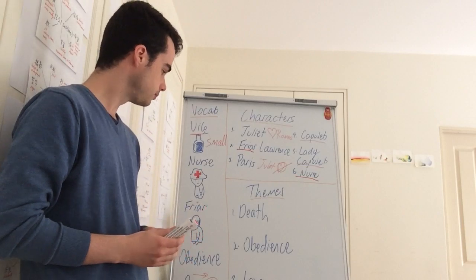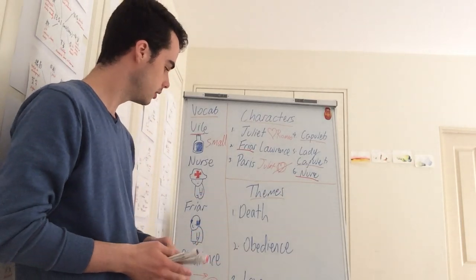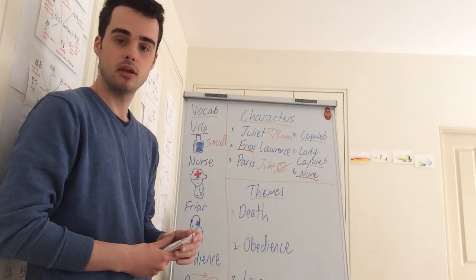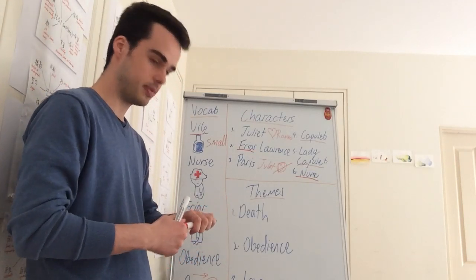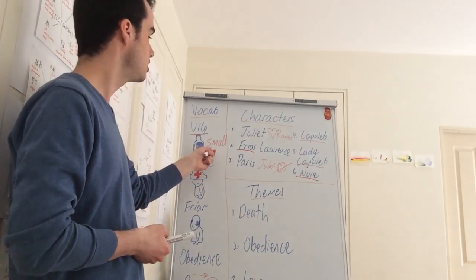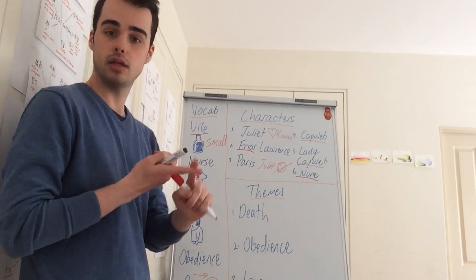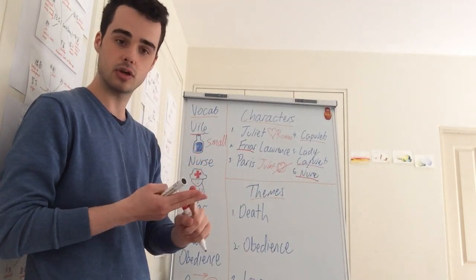So if we move on, we have the themes. And obedience is one of the themes right here. The first one is death. Juliet is willing to risk death in order to be with Romeo. So drinking this potion. She does not know if it will kill her or allow her to fake her death.